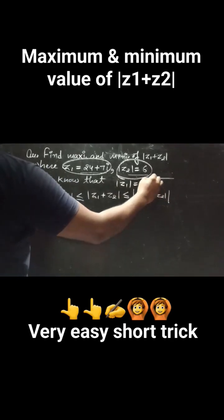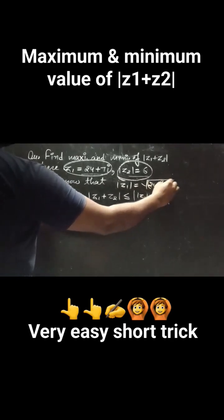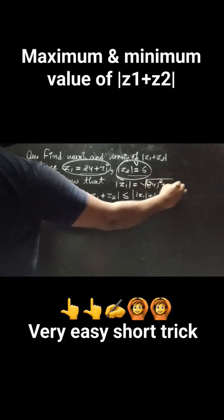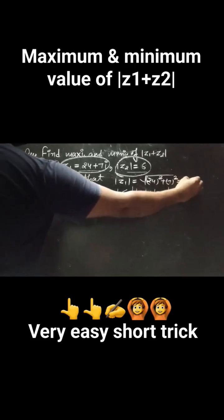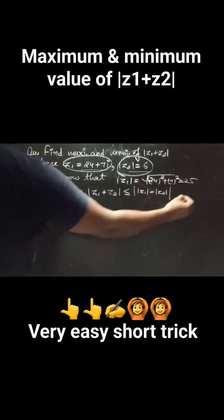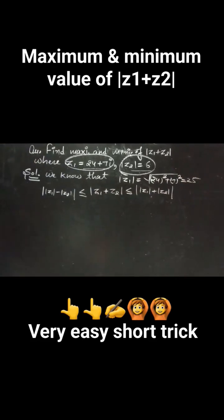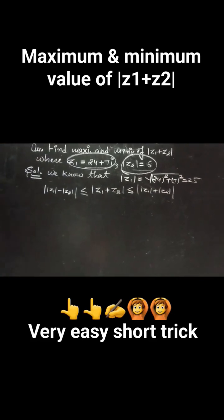Now calculate modulus of z₁: √(24² + 7²) = 25. Modulus of z₂ is already given, so no need to calculate. Now put in the values.